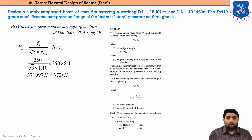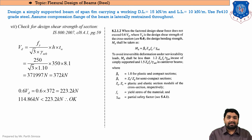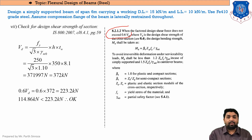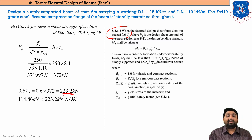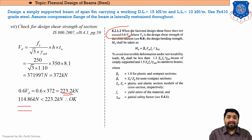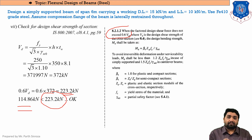An important rule: the design shear check requires that the factored design force does not exceed 0.6 × VD. So the effective shear capacity = 0.6 × 372 = 223.2 kN. The actual shear force to be resisted is 114.86 kN, which is less than 223.2 kN. Therefore, the section is adequate in shear.